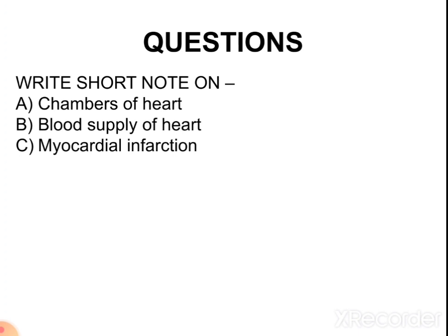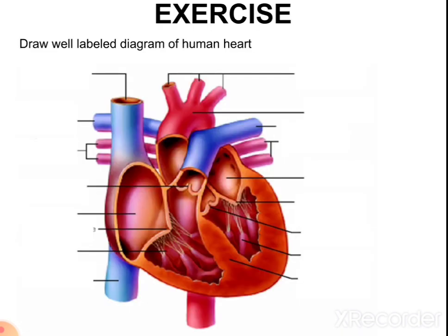Questions related to this topic include: describe all chambers of the heart (long question); describe the blood supply of the heart including arterial and venous drainage; and discuss myocardial infarction. For the exercise, draw the diagram of the heart and label all the unlabeled structures shown in the image. This completes the topic of the anatomy of the heart. Thank you.